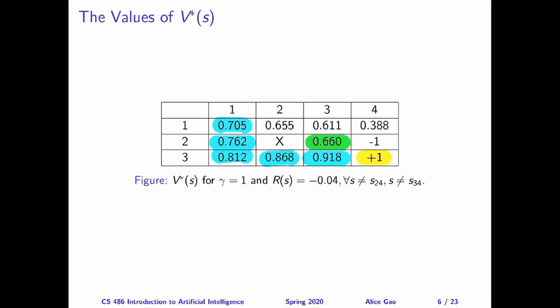Also, you can take a look at S22. This state, the expected utility is the lowest among all the non-goal states, and that's because we are trapped in this corner. And it's very, very likely that we're going to fall into the minus 1 state.